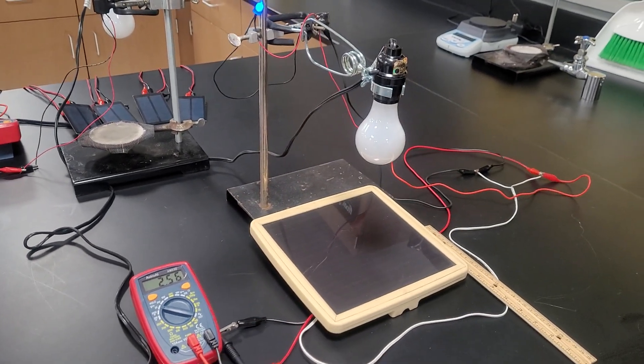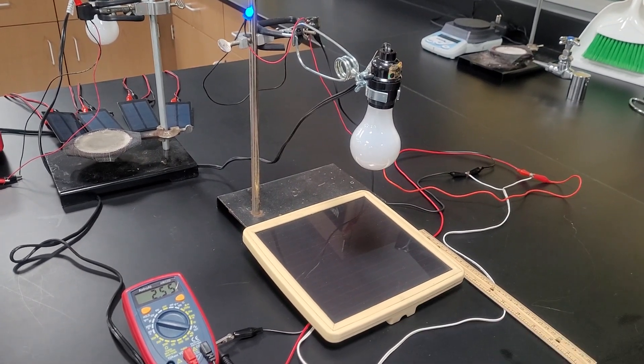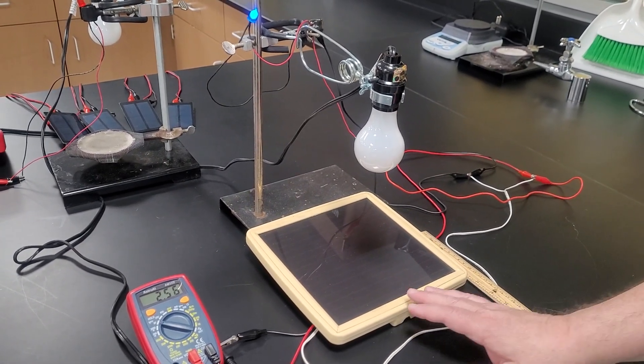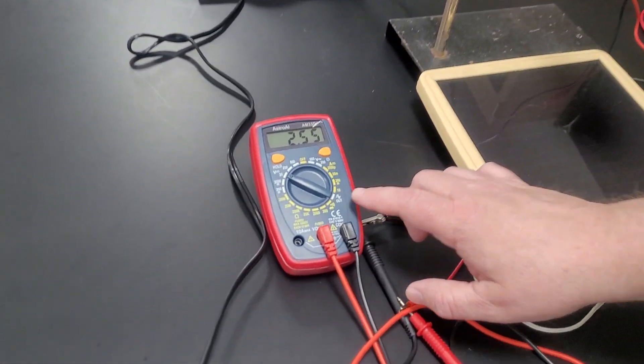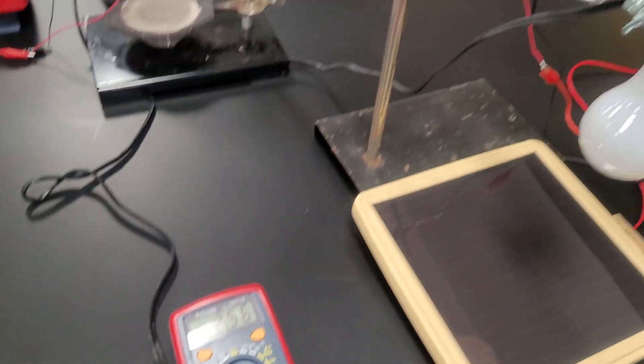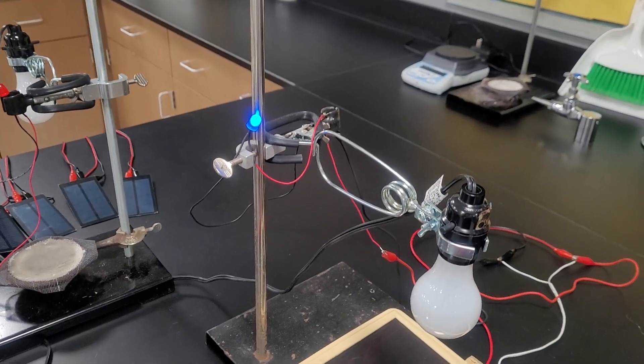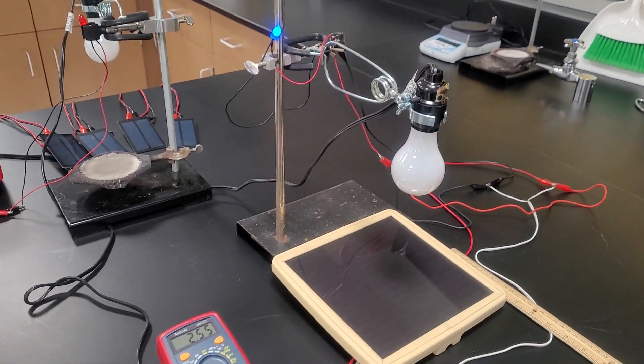So the first thing we want to do is take a look at the solar panel that we have here. This is off an old security light and so with this solar panel we are currently generating under just the classroom lights 2.56 volts of electricity and if you notice we have a little blue LED light hooked up here and so we're generating enough electricity with just the classroom lights to also run that little LED light.